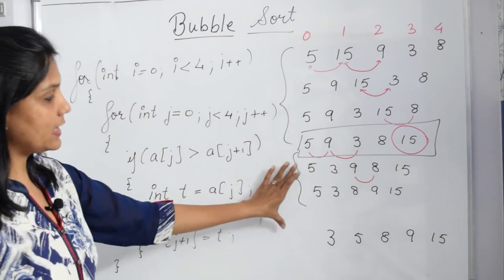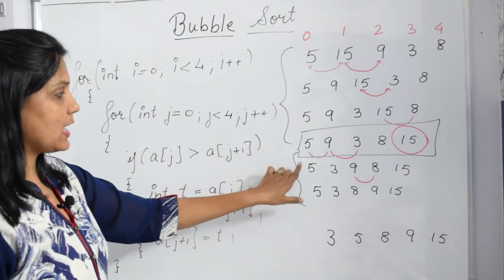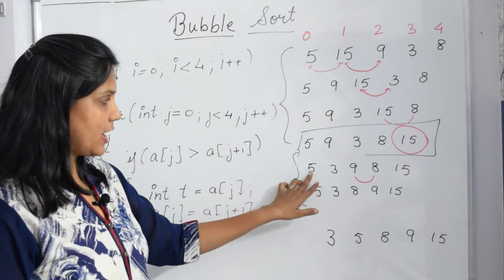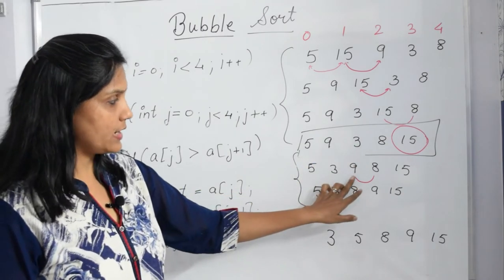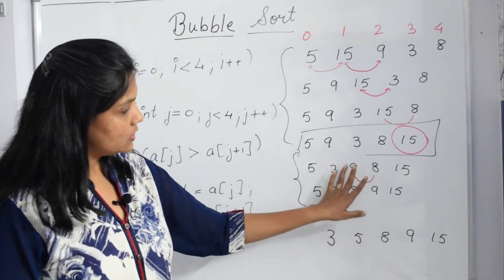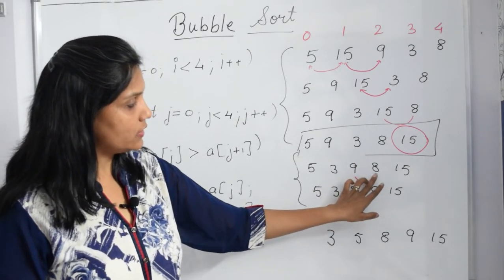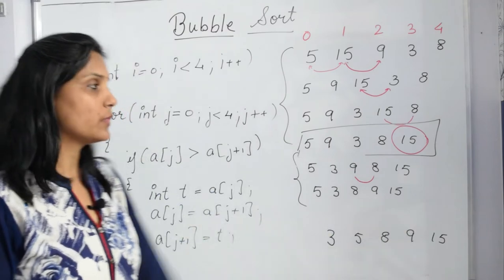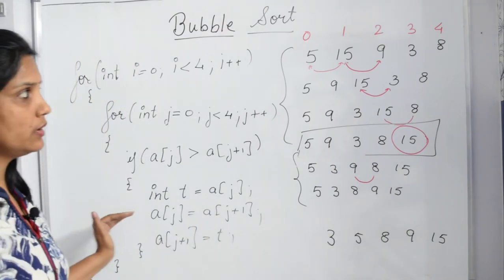For the next iteration, i becomes 1. Again we start j from 0. We compare 5 and 9 — not greater, leave it. Compare 9 and 3 — yes, 9 is greater, swap: 3, 9. Then compare 9 and 8 — swap: 8, 9. So the array progresses towards sorted order. This is how you implement bubble sort.